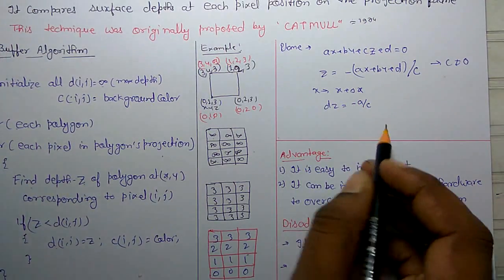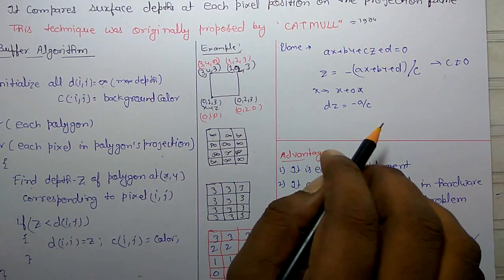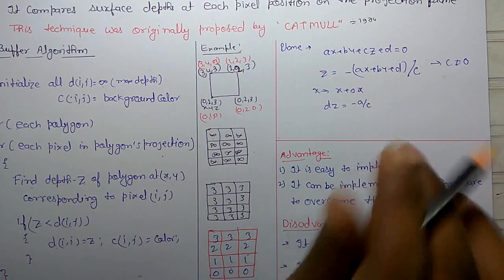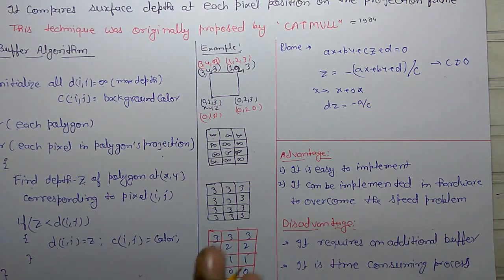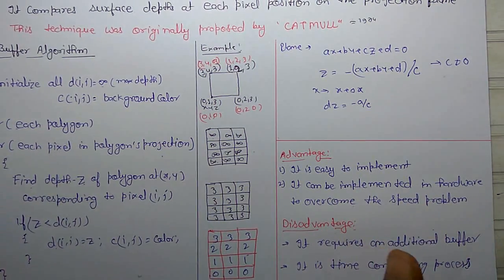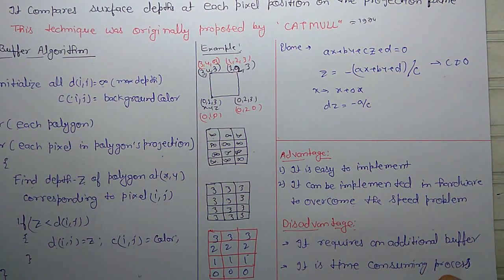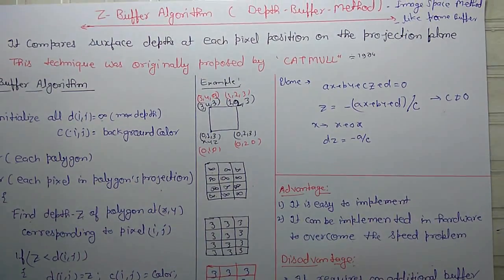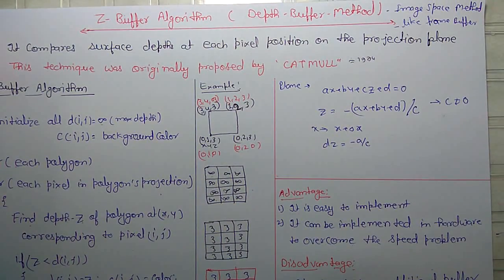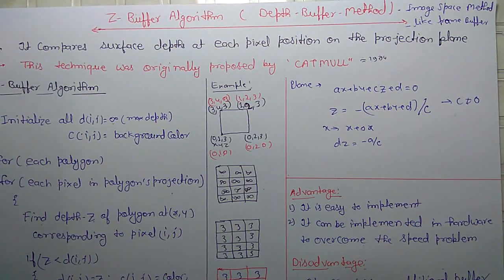From this incremental process, we can efficiently calculate depth values for the plane. So the Z-buffer algorithm is an image space method, like the frame buffer method. Thank you.